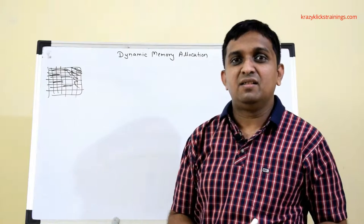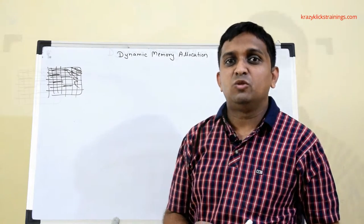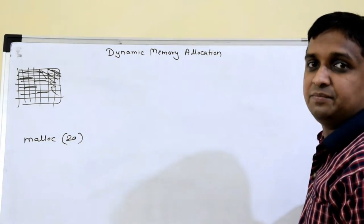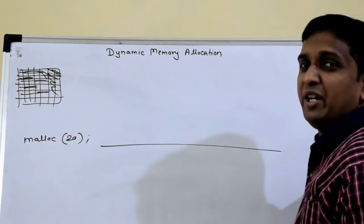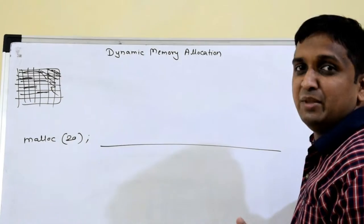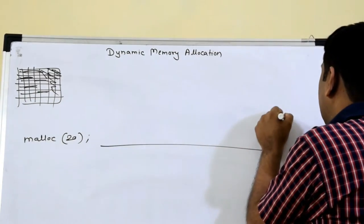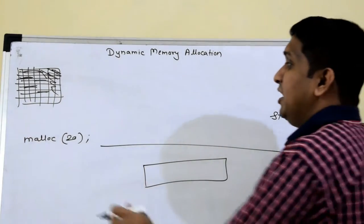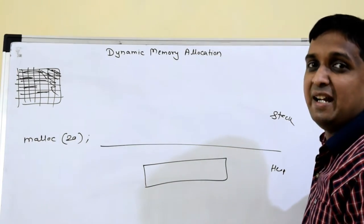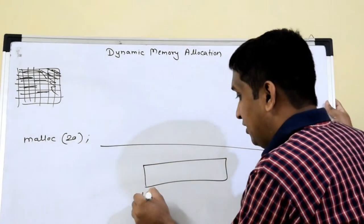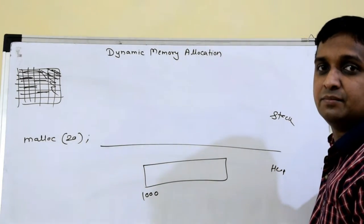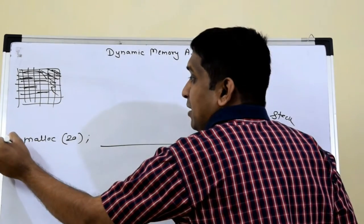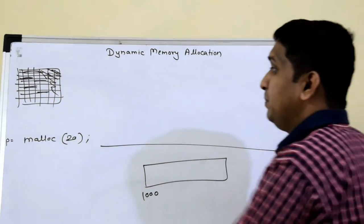Let's understand the malloc function. If I write malloc(20), malloc will allocate memory of 20 bytes onto the heap. Dynamic memory allocation is always done on the heap - there are four parts: stack, heap, data segment, and code segment. This statement malloc(20) will allocate 20 bytes of memory on the heap, and malloc will return the starting address of that block - say address 1000. I need to store this address in some variable p.